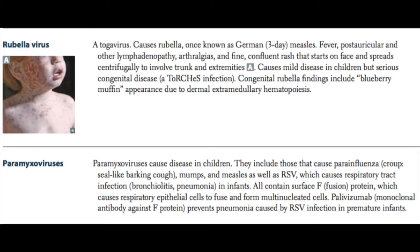Rubella virus is a togavirus that causes German measles, more commonly known as the three-day measles. It's characterized by fever, lymphadenopathy, arthralgias, and a fine truncal rash. It causes mild disease in children but can cause serious congenital disease and is one of the TORCH infections.